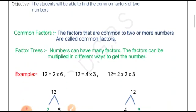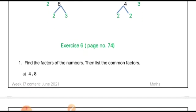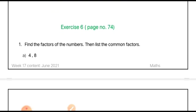This is associated with exercise 6 of your book. The factor tree method gives us the factors using multiplication and division methods. The first question is to find the factors of the numbers and then list the common factors. We will find the factors of both numbers, then check which factors are present in both.